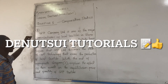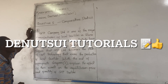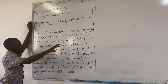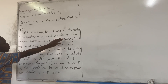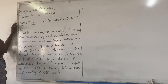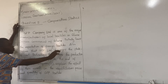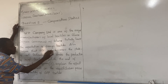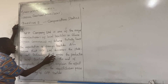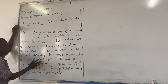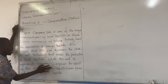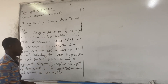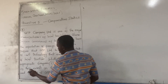We are continuing with the B part of the question. GTP Company Limited is one of the major manufacturers of local textiles in Ghana. Suppose the government of Ghana totally bans the importation of foreign textiles. Also, suppose that GTP Limited discovers the state-of-the-art technology that eases the production of local textiles. With the aid of appropriate diagrams, explain the effects of these events.